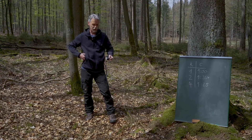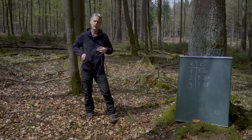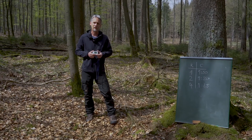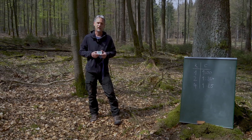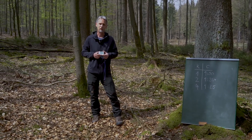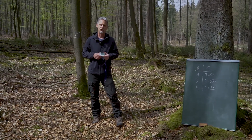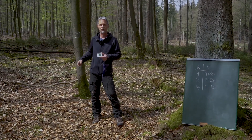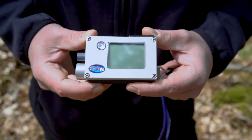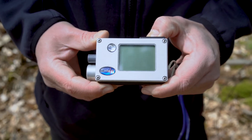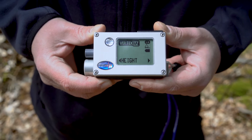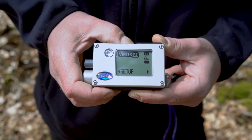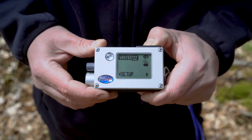In addition, I also want to show you how you can use the vertex instrument not to measure a critical distance but the other way around — to find out the critical diameter that a tree needs to exceed to become part of a sample. I'll show you exactly on this same example. With the vertex we can preset a counting factor for Bitterlich plots or Relloscope sampling by navigating to the setup menu and confirming.